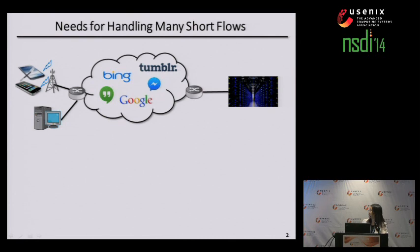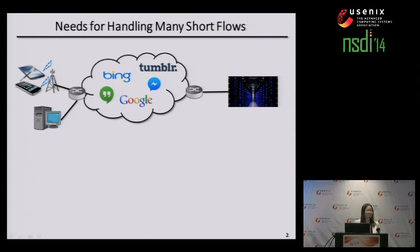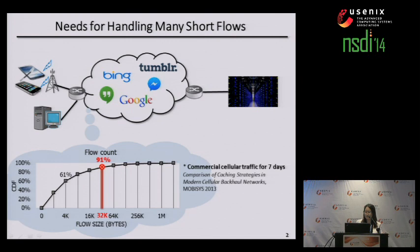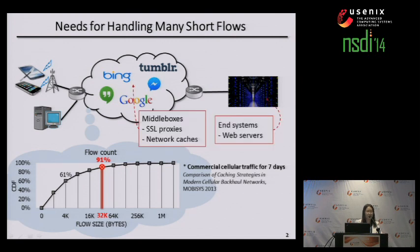As we all know, internet traffic keeps increasing. If we look closely at the traffic, short flows take up the majority of flows these days. For example, over 90% of commercial traffic has smaller size than 32 kilobytes. That's not only happening in the cellular network, but also happening in data centers. While these short flows take up only a small fraction of the traffic volume, they impose high flow management overhead. Many network systems such as SSL proxy, network caches, and web servers face a challenge handling many short flows.